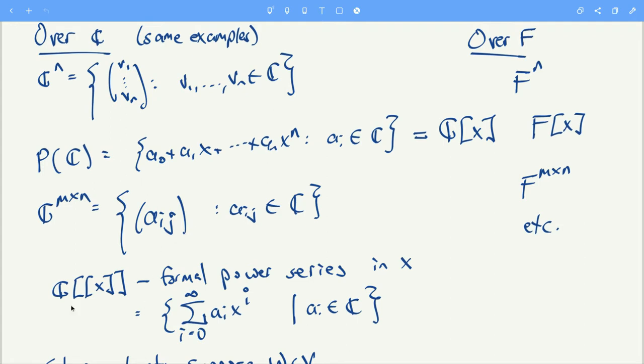You have the m by n matrices with complex entries. Another example might be like the formal power series in the indeterminate x, so expressions of the form a_0 plus a_1 x plus a_2 x squared and so on going on to infinity where all the a_i's are complex numbers. That's a vector space. And then over a general field you still have F^n, you have the polynomials with coefficients in F, you have the m by n matrices with coefficients in F and so on.